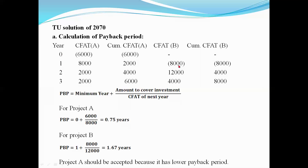Now in Project B, the cumulative cash flow starts at minus 8,000. We add 2,000, then 4,000, making cumulative 8,000. The last month minus amount of investment is 8,000. The minimum year is 1, next year is 2. The Project B payback period is 2 years, with cash flow of 2,000. So: 1,000 divided by 2,000 gives 1.67 years. The payback period for Project B is approximately 1.67 years.